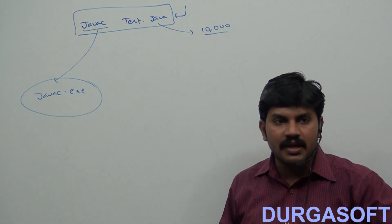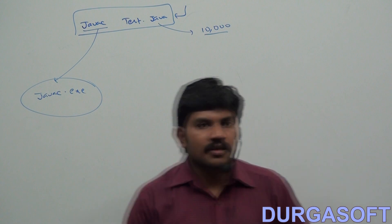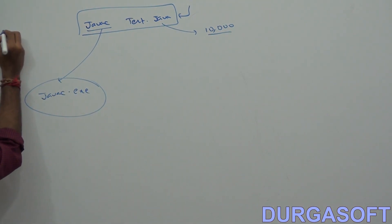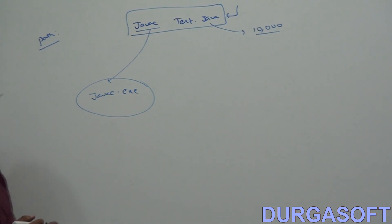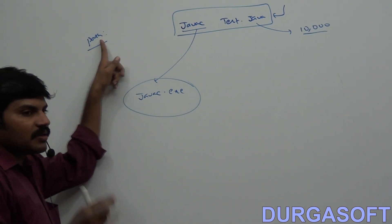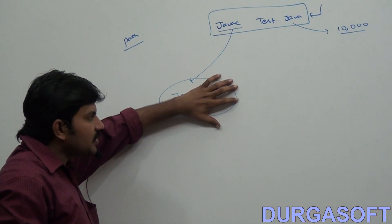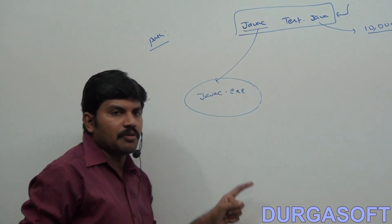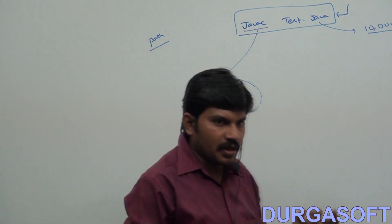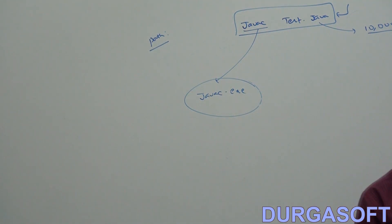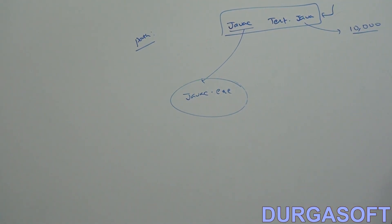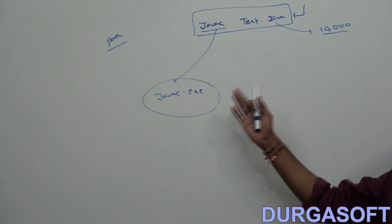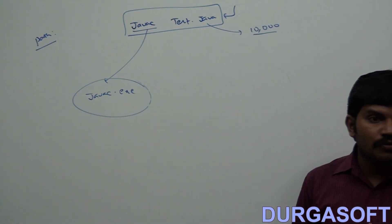How can my system be aware of where javac.exe is? It will search from the PATH location. PATH describes the location where binary executables are available. Path represents the location where binary executables are available. If I am not setting PATH, then our javac command won't work and the java command won't work.